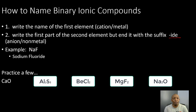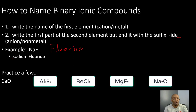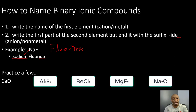For example: we have Na (sodium) and F (fluorine). Following our two steps, we write sodium for the first element, and then we write the first part of fluorine — we take off the -INE and put -IDE at the end. That gives us sodium fluoride as the binary ionic compound name for NaF.